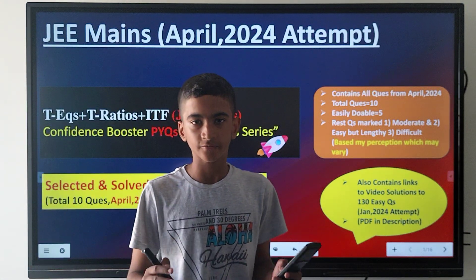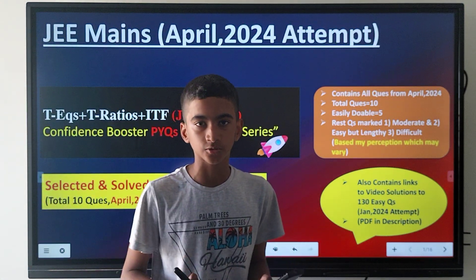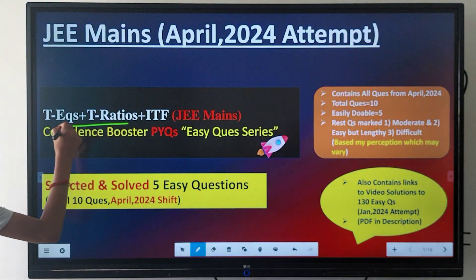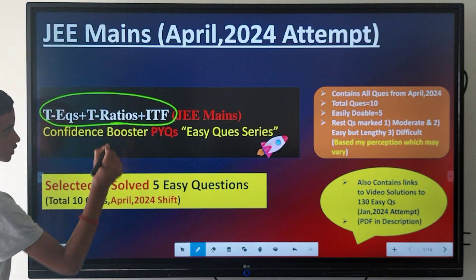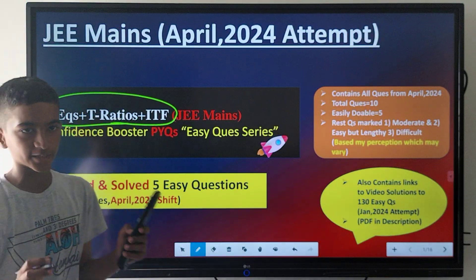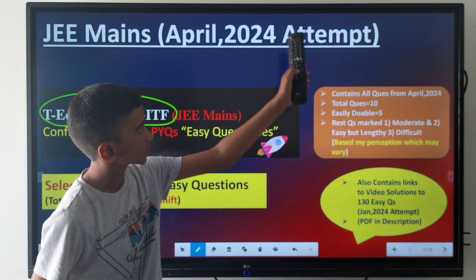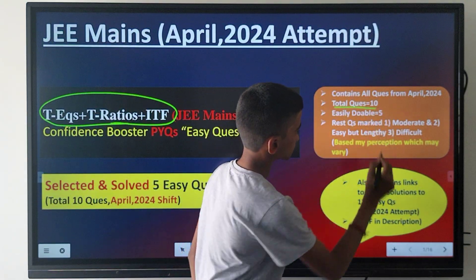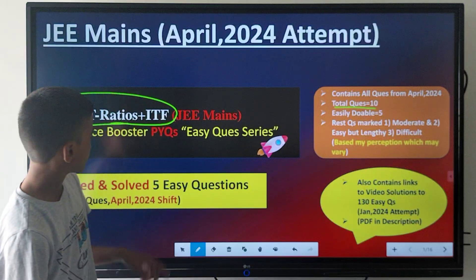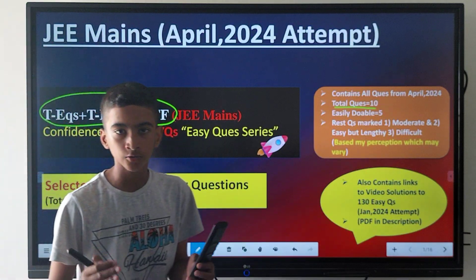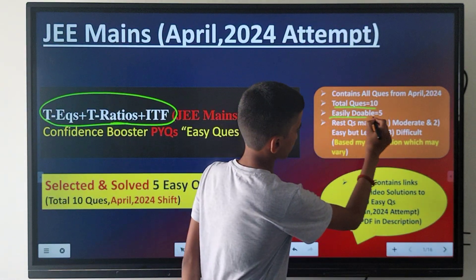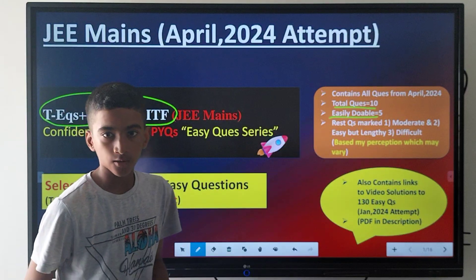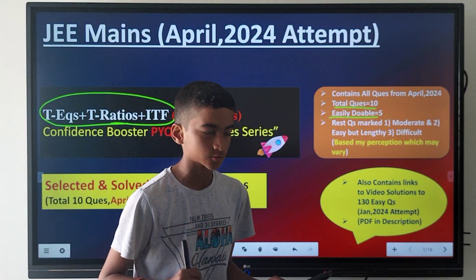Hi all, today we are going to solve easily doable questions from trigonometric equations, ratios, and ITF from different shifts of April 2024. We have 10 questions from these three topics, out of which 5 are easily doable, which we are going to solve. Let's start from our first question.